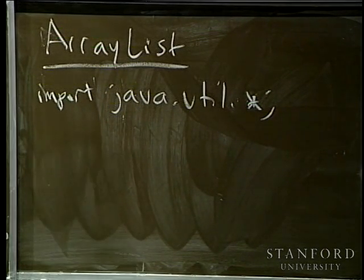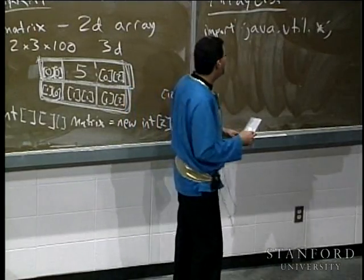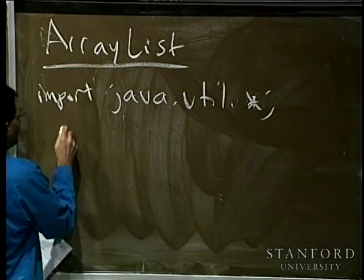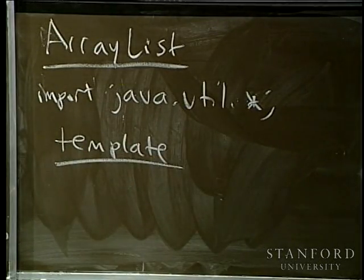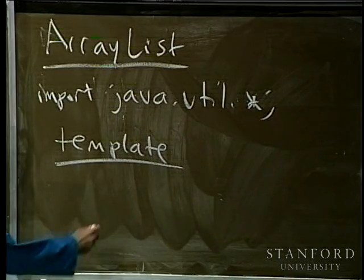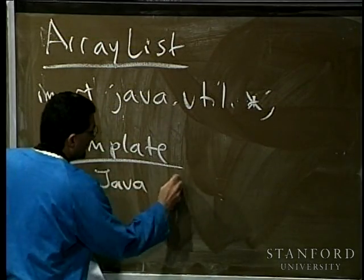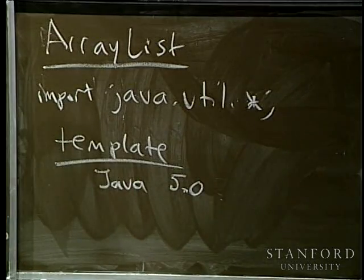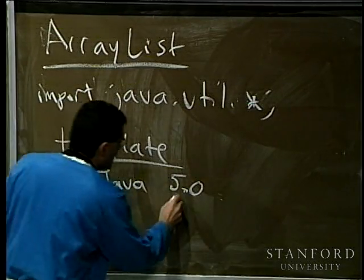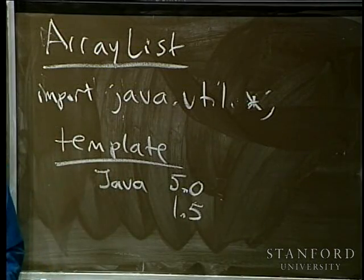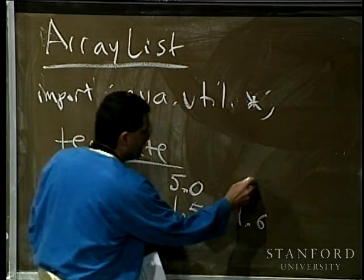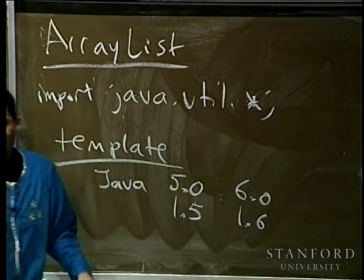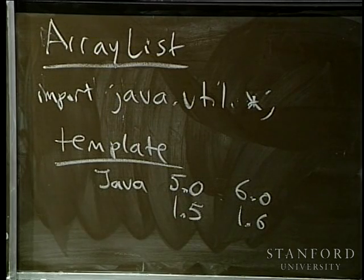Underneath the hood, the implementation can differ, but that's abstracted away. As far as you're concerned, effective and actual size are the same. This ArrayList is called a template. Starting in Java 5.0 — which some call Java 1.5 — there's this template concept. What you have installed is either Java 1.5 or 1.6, which some programmers call Java 5 or Java 6. The naming is confusing.